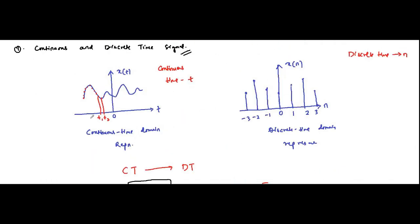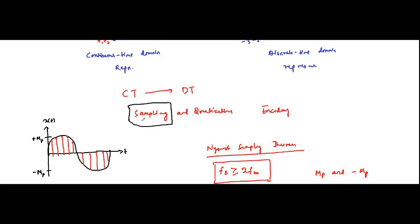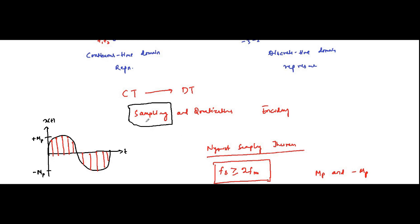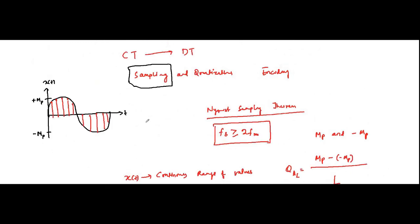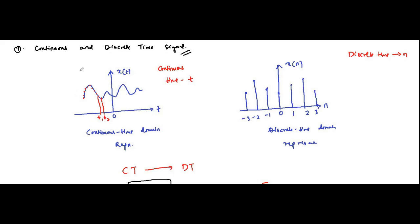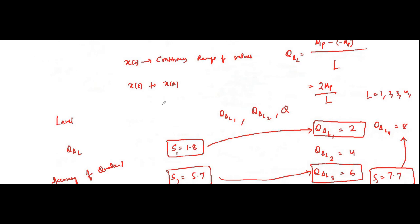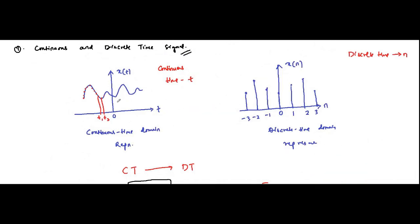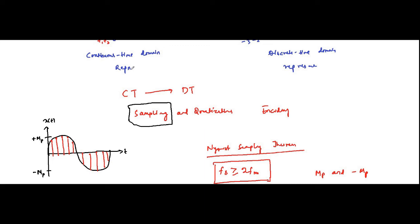We will discuss sampling and quantization in more detail in digital communication. For now, this was just a general introduction. Through these two processes — sampling and quantization — we convert a continuous time signal to a discrete time signal. There are many advantages of discrete time or digital signals over analog signals, which we have already discussed in the introductory parts. This concludes the classification of continuous time and discrete time signals.